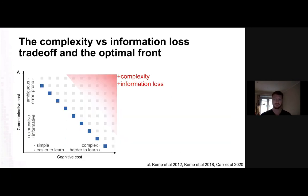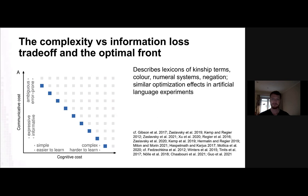This is how we get to the optimal front. Languages tend to fall on the optimal front on these two axes of communicative cost and cognitive cost, avoiding the situation where you have both complexity and information loss. In this schematic, real languages are blue and hypothetical languages are grey. Quite a few people have used this framework to describe lexicons across languages — for example, kinship terms, colour, numeral systems — and the result tends always to be the same: natural language falls somewhere along this optimal front.